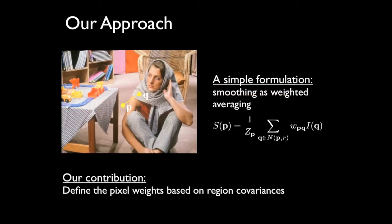We obtain the structural layer of an image by smoothing the image. We follow the simplest classical formulation and define the smoothing value of a pixel as the weighted average of its neighboring pixels. The novelty of our approach specifically lies in the patch-based pixel weights, which are defined based on region covariances.